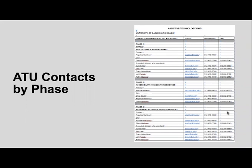This is a list containing the most updated contact information for the UIC Assistive Technology staff by phase. It also includes the contact information of individuals you need to reach when making an initial referral. For phase one — the evaluation in the nursing home — the initial contact is Angelica Martinez, and you can CC the director of our unit, Mr. Glenn Hedman. This list also contains the contact information of each clinician by phase, which you can use to follow up on services provided.